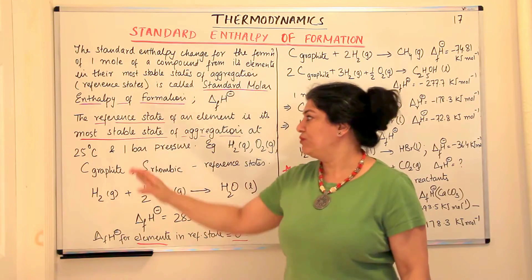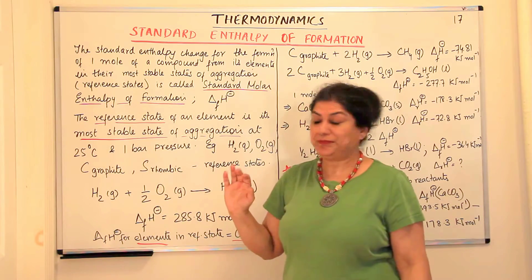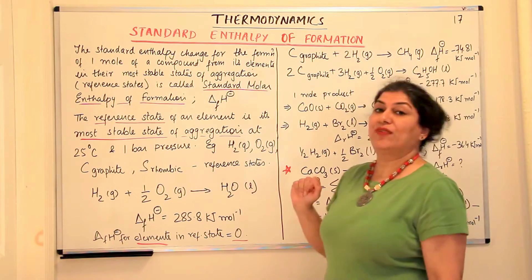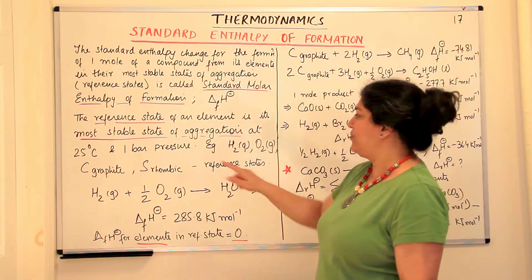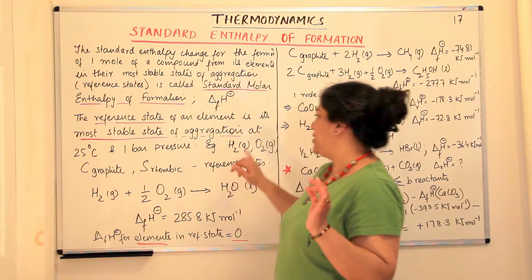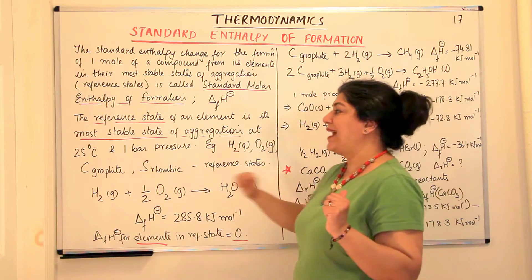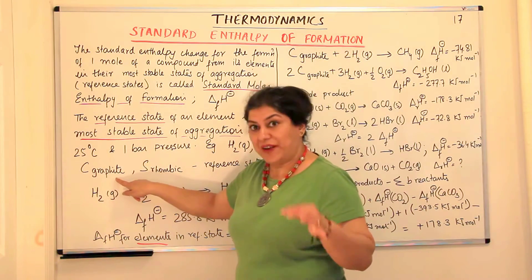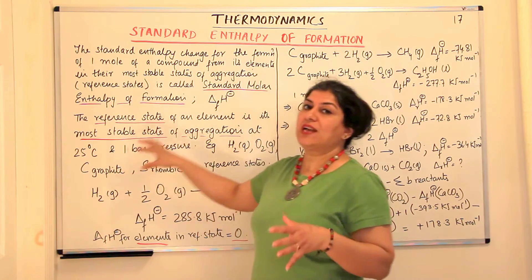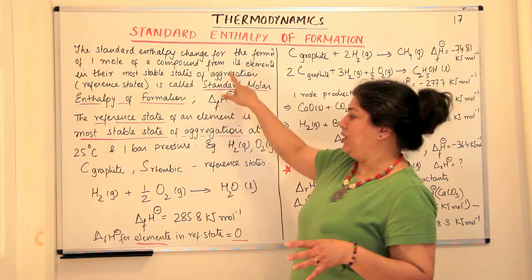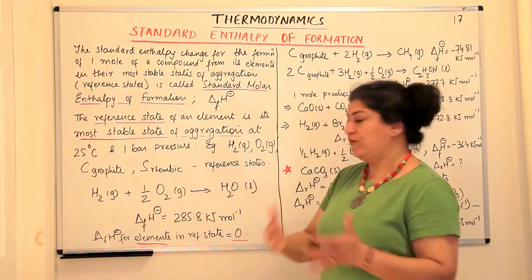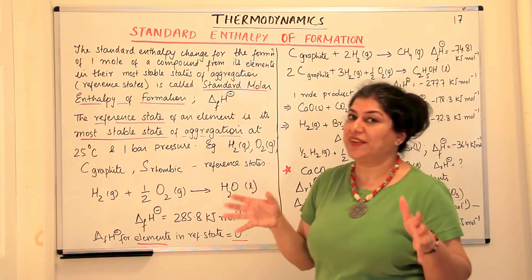The reference state only tells you that under these conditions, which is the most stable form of aggregation. The reference state of an element is the most stable state of aggregation at 25 degrees Celsius and one bar pressure. For example, hydrogen is present as a gas at 25 degrees Celsius and one bar pressure. Oxygen is also present as a gas. Carbon — the allotrope graphite — is most stable at this temperature. Therefore, for all reactions of combination or formation, we will be using graphite. And for sulfur, we have rhombic sulfur. Different elements have different reference states.